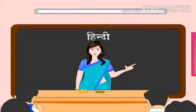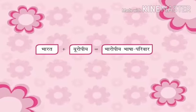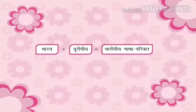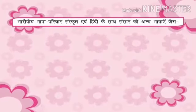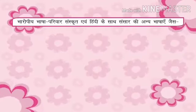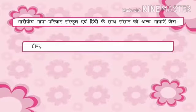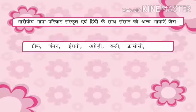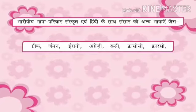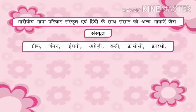Bhartiya bhashaen jintu bhasha pariwaron mein aati hain, ve hain: Ek, Bharat-Europiya bhasha pariwar; Do, Dravidian bhasha pariwar. Ek, Bharat-Europiya bhasha pariwar mein Sanskrit evam Hindi ke saath, sansar ki anye bhashaen, jaisi Greek, German, Irani, Angrezi, Rusi, Fransisi aur Farsi aadi bhashaen, sammilit hain. Yeh sabhi bhashaen Sanskrit se janmi hain.